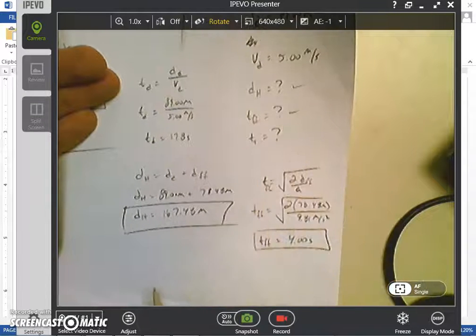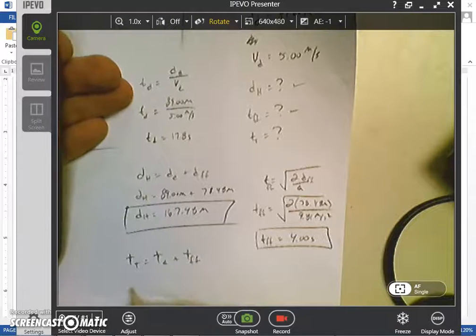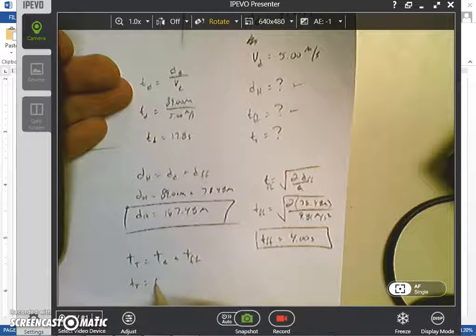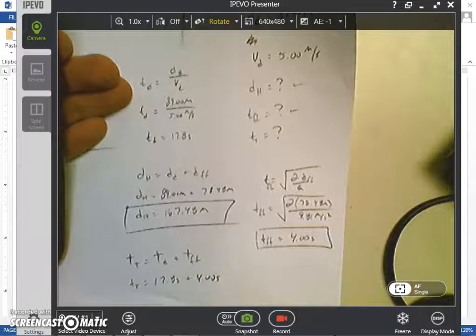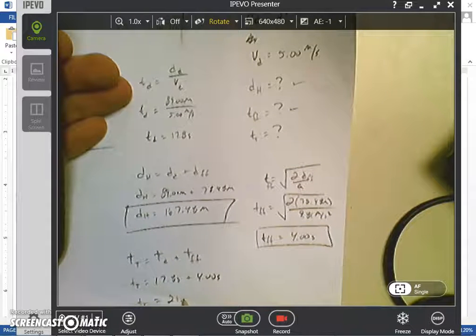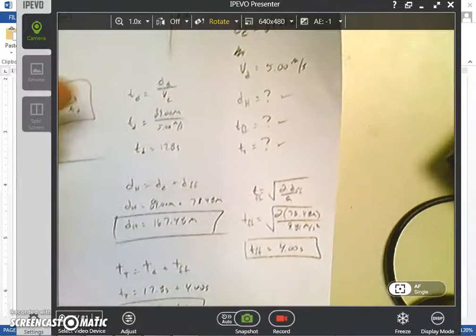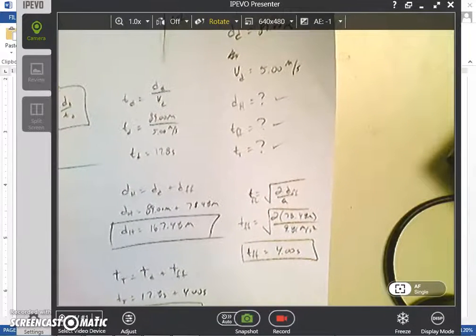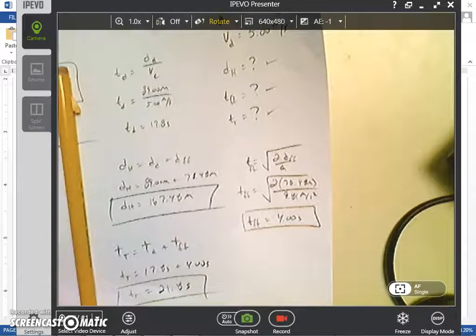So total time is equal to deployment time plus freefall time. So my total time is equal to 17.8 seconds plus 4.00 seconds. So I get 21.8 seconds for that. So I've checked off all my boxes, I'm going to go back into the simulator software, plug those numbers in, and then see if it says correct or not.